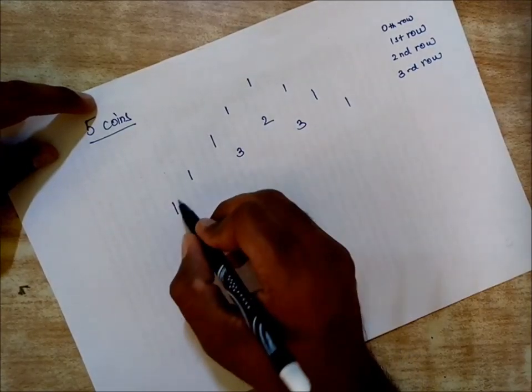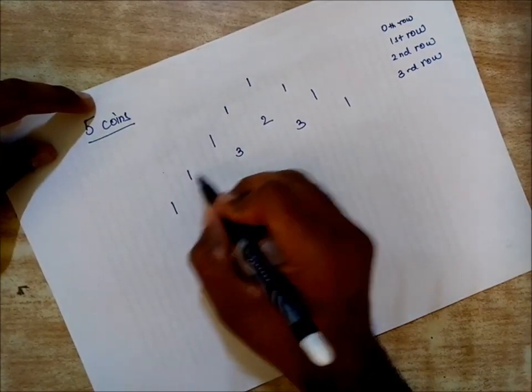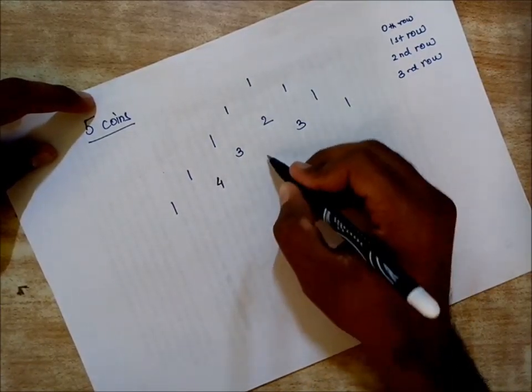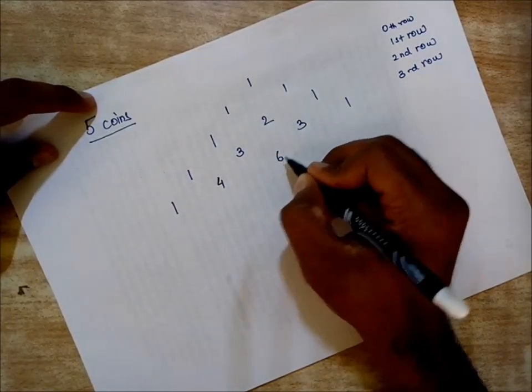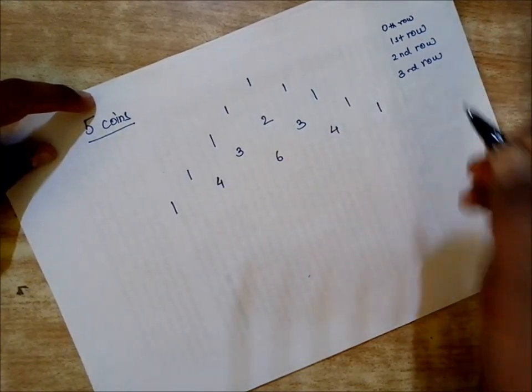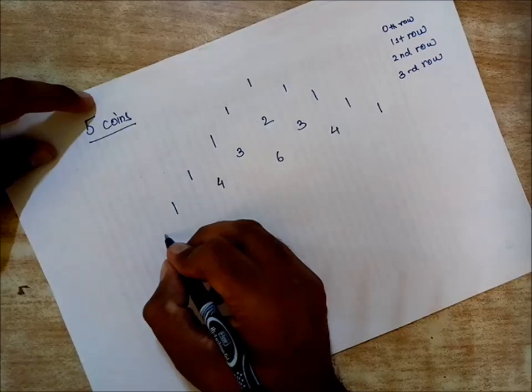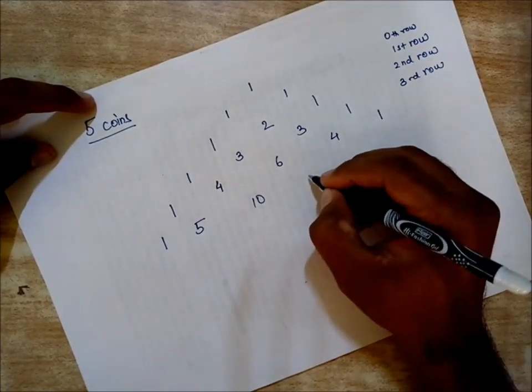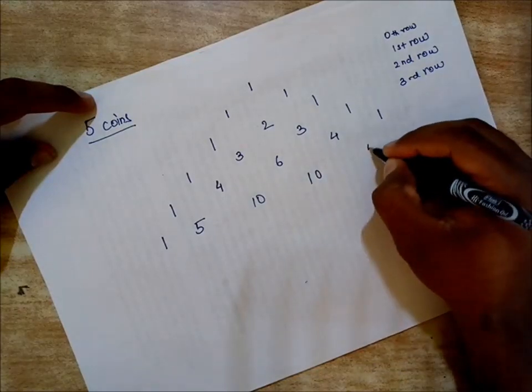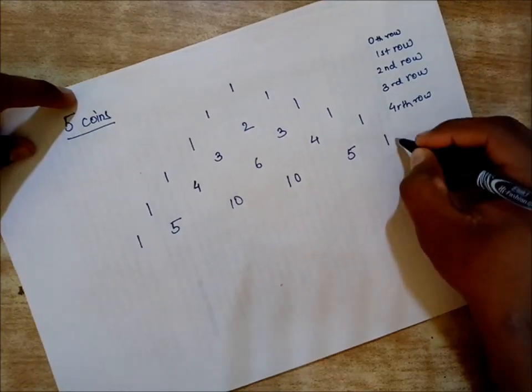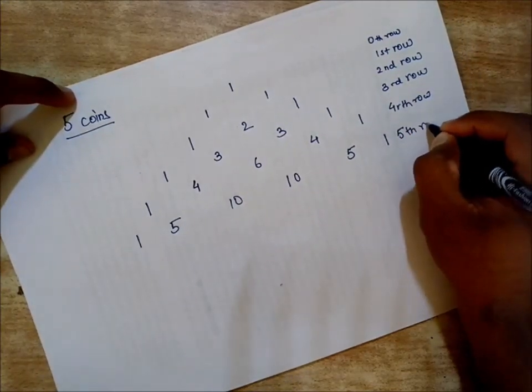For example, one plus three is four, you write in the middle. Then three plus three is six, we write in the middle. Three plus one is four, then at the end there is one again. One, five, ten, ten, five, one. This was the fourth row and this was the fifth row.